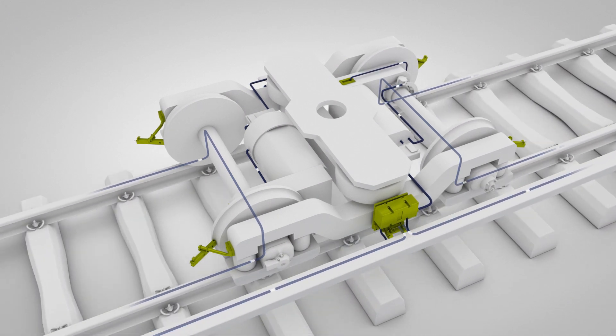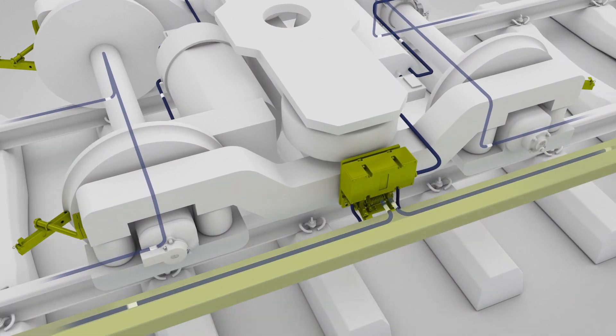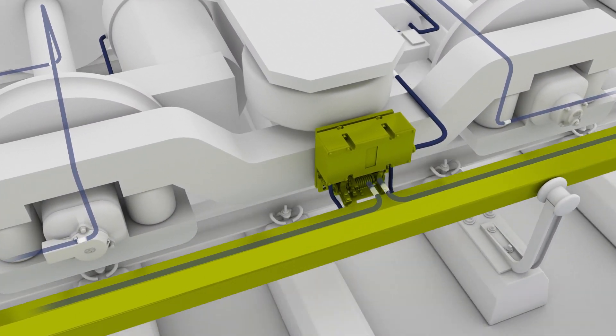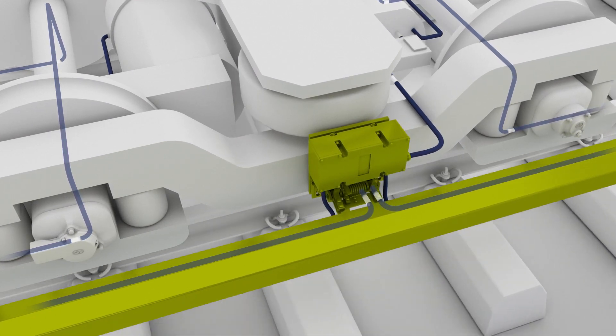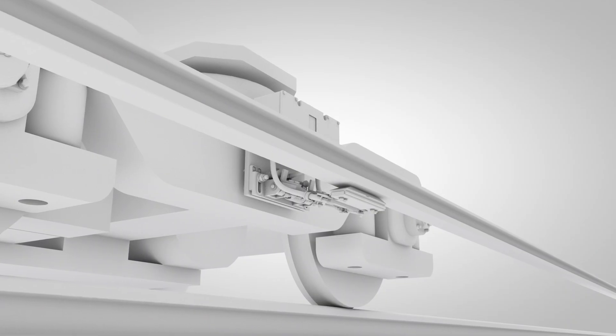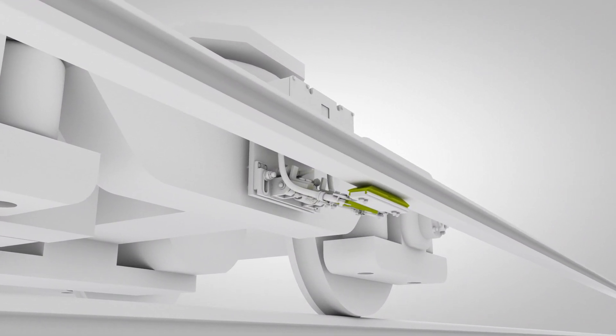Maintenance-free third rail current collectors from Schunk provide more power for light rail trains all over the world. Schunk multi-system current collectors can be used for various operating voltages. For this system, an intelligent collector shoe catch device increases safety and reliability.